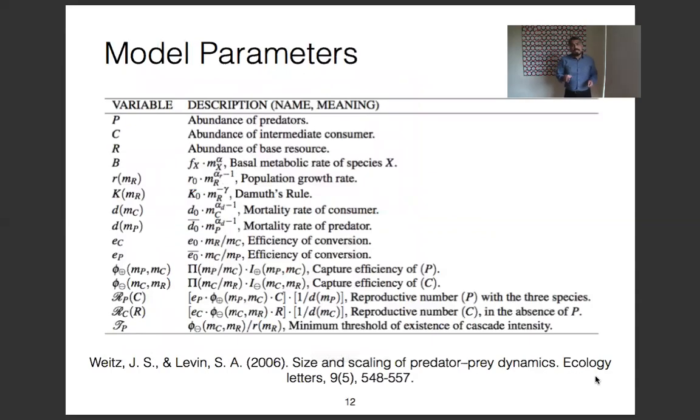We will denote by P, C, and R, the abundance of top predator, consumer, and basal resource respectively. Furthermore, one characteristic of the model we will present is that all the parameters depend on body size in an allometric way.